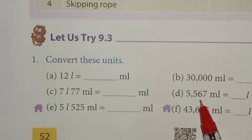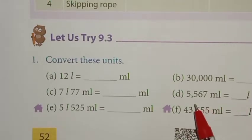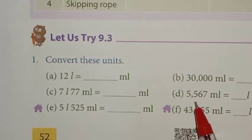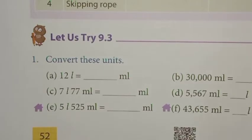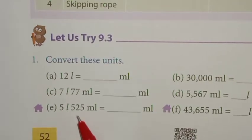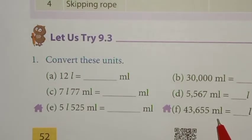Five thousand five hundred sixty-seven milliliter equals five liters 567 milliliter. Similarly, five liter 525 milliliter is the answer for the next one. And forty-three thousand six hundred and fifty-five milliliter equals forty-three liters 655 milliliter.